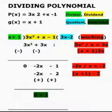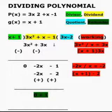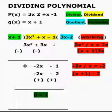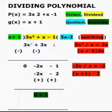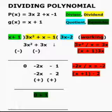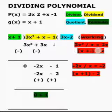Now let us see the dividing process. Let us divide the first term of the dividend by the first term of the divisor. What is the first term of the dividend here? 3x², and the first term of the divisor is x. So 3x² divided by x is 3x.